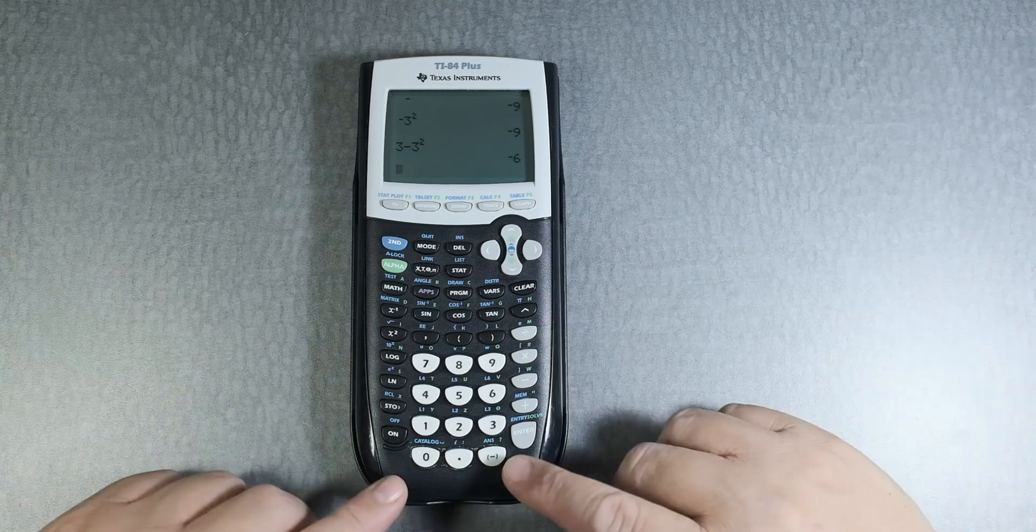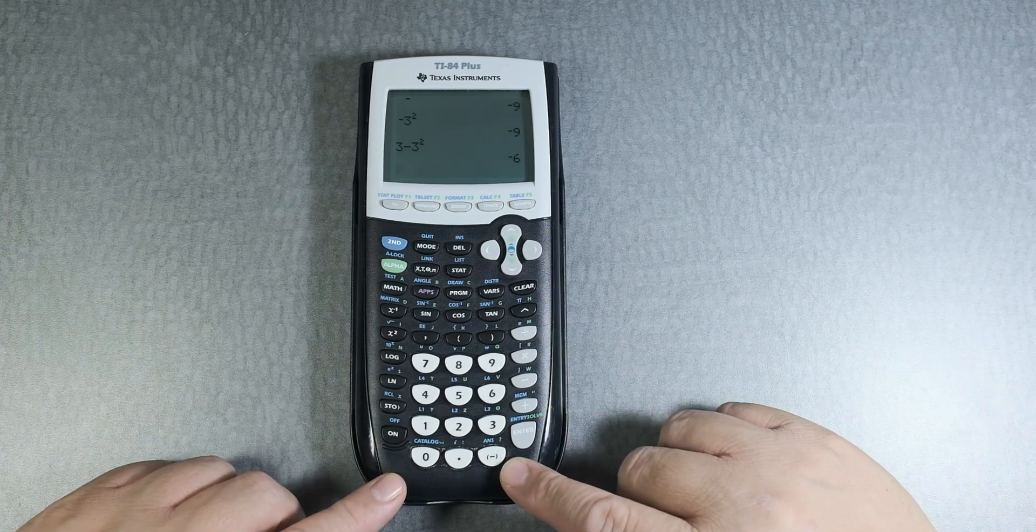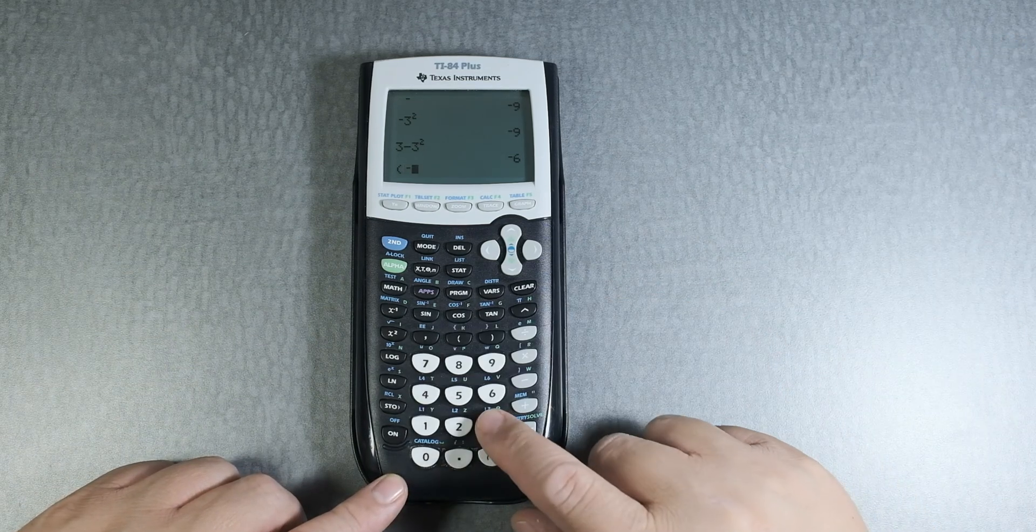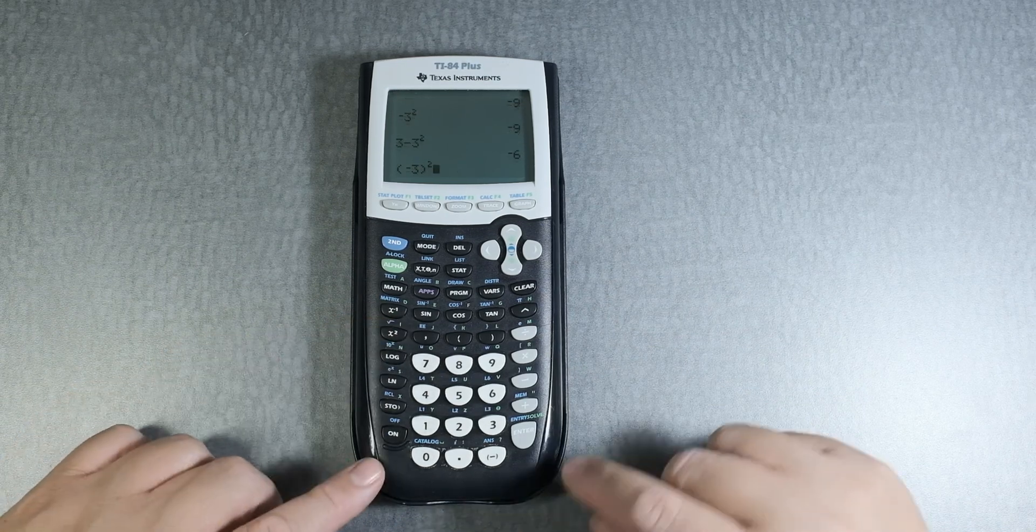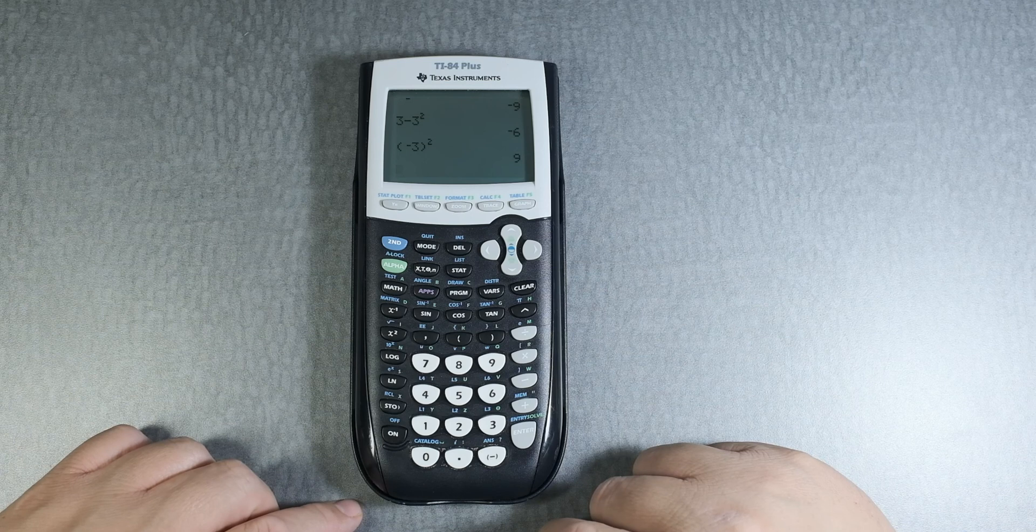How to fix that? Well, that's not a problem. You put parentheses, negative 3, and then close parentheses, and then you can square it, and that gives you a positive 9.